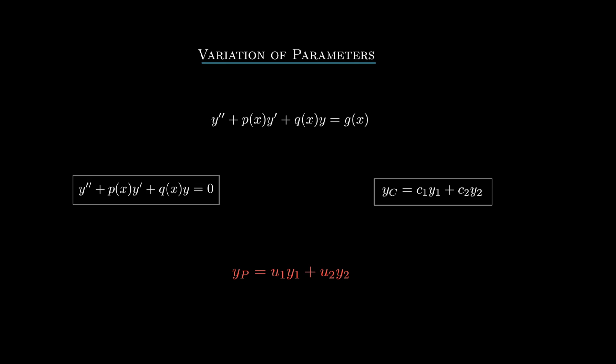Variation of parameters is another method for determining particular solutions to a second-order linear differential equation. The nice thing about this method is that it works much more generally than the method of undetermined coefficients from the previous two videos.